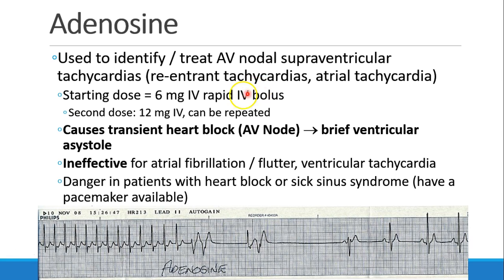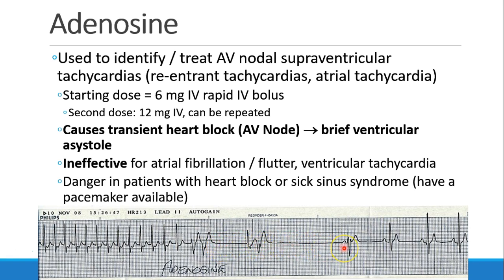Usually we start with a 6 milligram IV bolus, and a repeat dose might be 12 milligrams. When we give adenosine, we see transient heart block or brief ventricular asystole. This EKG shows a patient with SVT who got adenosine, then a couple quick PVCs, and then basically silence for several seconds, and when it comes back they are in sinus rhythm.